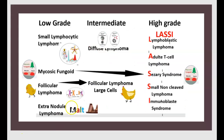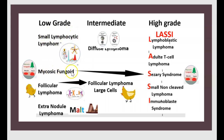There are three categories in non-Hodgkin lymphoma: low-grade, intermediate-grade, and high-grade. Low-grade includes small lymphocytic lymphoma, mycosis fungoides, follicular lymphoma, and extranodal lymphoma.